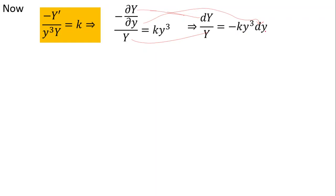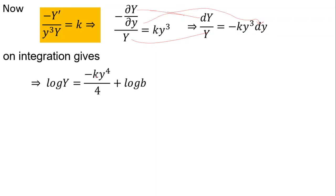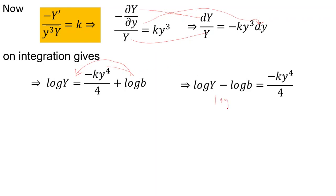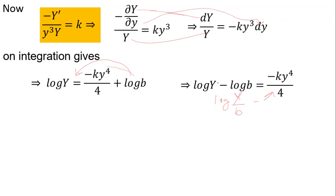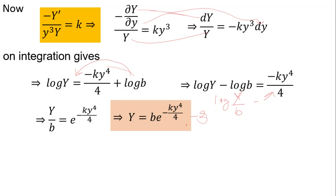On integrating: log Y = -k·y⁴/4 + log b, where log b is the constant of integration. Taking log b to the left: log(Y/b) = -k·y⁴/4, so Y/b = e^(-ky⁴/4). Multiplying both sides by b gives capital Y = b·e^(-ky⁴/4). This is the second solution.